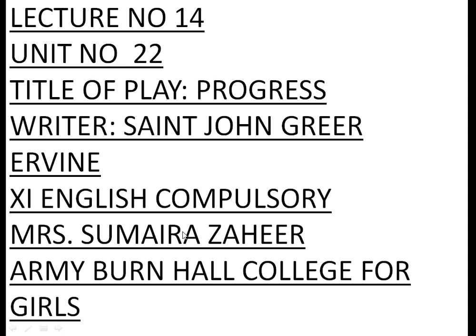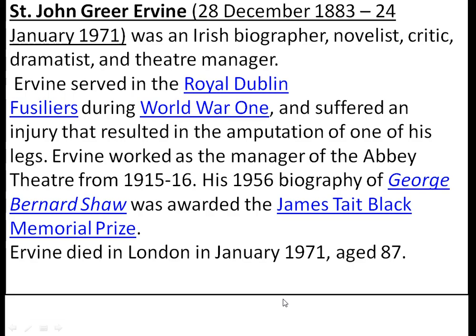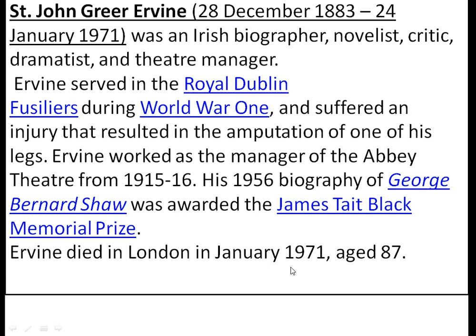First of all, about the writer — the author Saint John Greer Erwin. He was an Irish biographer, novelist, critic, dramatist, and theater manager. He served in the Royal Dublin Fusiliers during World War One and suffered an injury that resulted in the amputation of one of his legs. Erwin worked as the manager of the Abbey Theater from 1915 to 1916. His 1956 biography of George Bernard Shaw was awarded the James State Black Memorial Prize. He died in London in January 1971 at the age of 87.